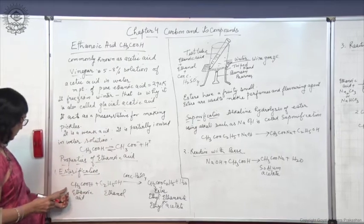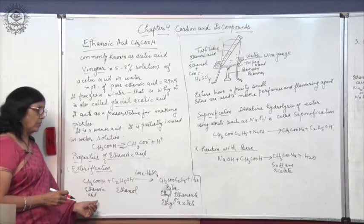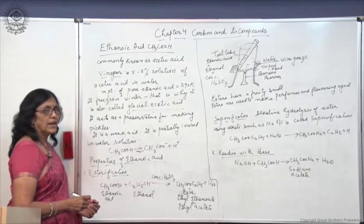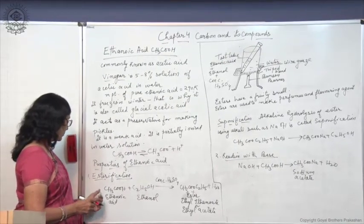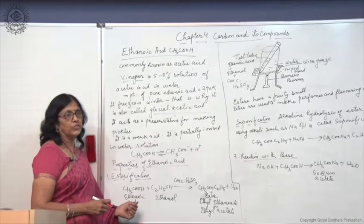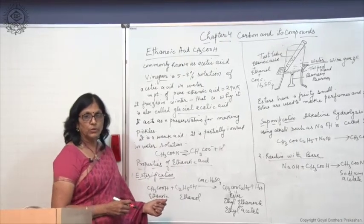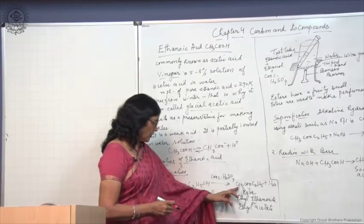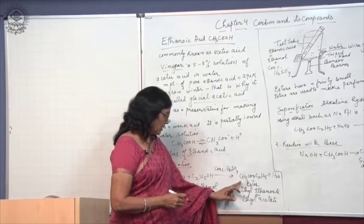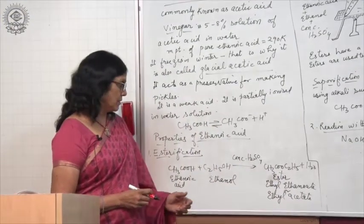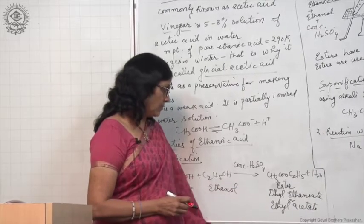See this balanced chemical equation showing the reaction during esterification: CH3COOH plus C2H5OH gives CH3COOC2H5 plus H2O. This is the formula of the ester. Its common name is ethyl acetate and IUPAC name is ethyl ethanoate.